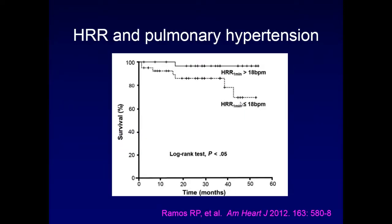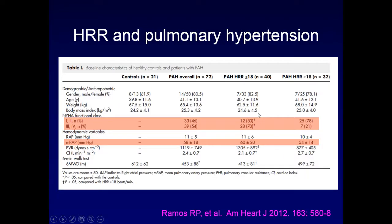The same holds true in pulmonary hypertension, with a different cutoff: using 18 beats per minute as the cutoff, individuals with heart rate recovery greater than 18 have very low mortality, whereas those below 18 have a worse prognosis. Moreover, this is predictive of disease severity — 70% of those with heart rate recovery less than 18 beats per minute had functional class 3 and 4, while 78% of those with recovery greater than 18 had functional class 1 and 2, even when pulmonary pressures were not that different between groups.